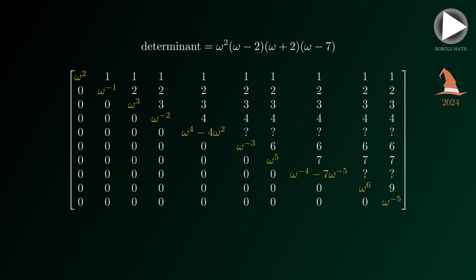In expanded form, this is equivalent to omega to the fifth minus seven times omega to the fourth minus four times omega cubed plus 28 times omega squared. And this is our final answer.